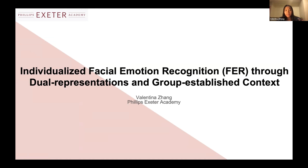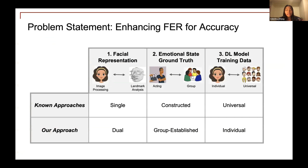The goal of my research is to improve FER accuracy, which is critical to clinical care and many other FER application contexts that are sensitive to error. My research focused on three main limiting factors in existing approaches: number one, facial representation; number two, emotional state ground truth; and number three, deep learning and model training data. In this presentation, we will explore alternatives on these three dimensions.